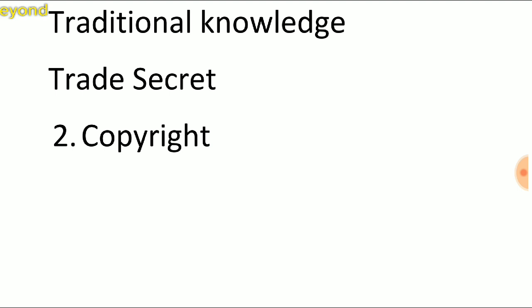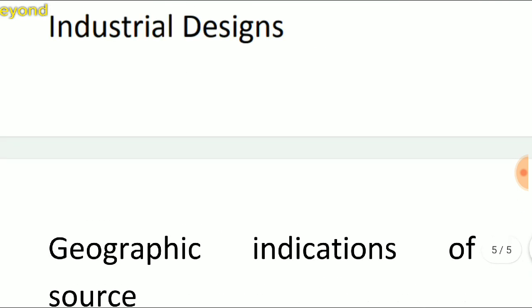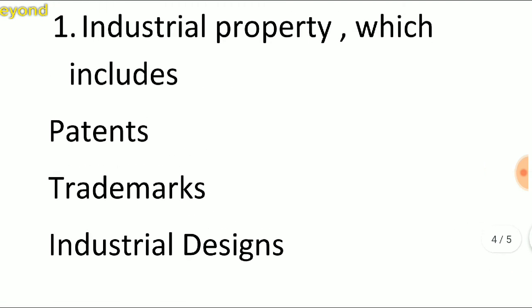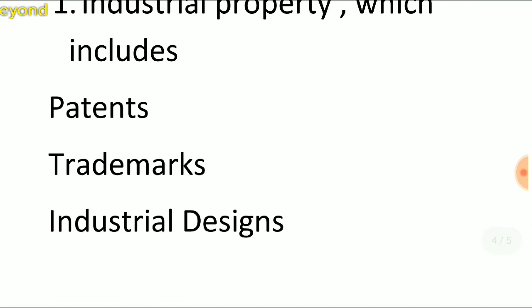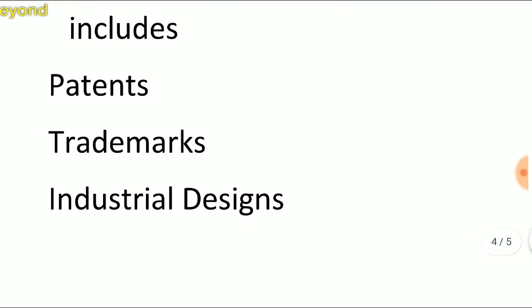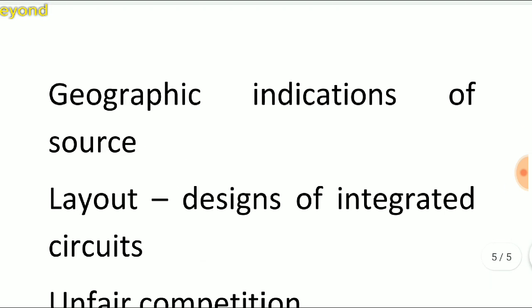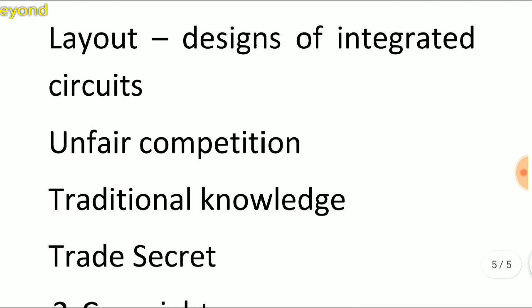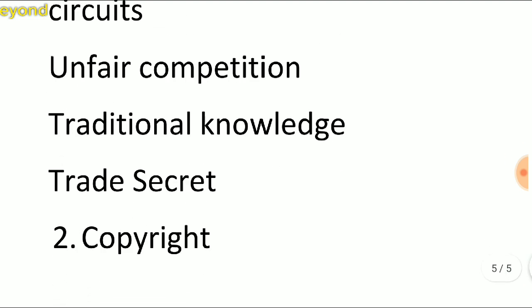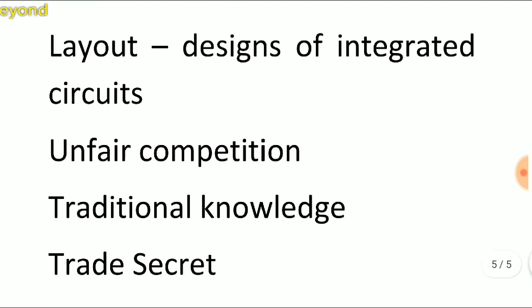The second category is Copyright. I will explain each one — patent, trademark, industrial design, geographical indication of source, layout design, traditional knowledge, trade secrets, and copyright — what each one is and what qualifies for it. Patent and copyright are the two most important ones.